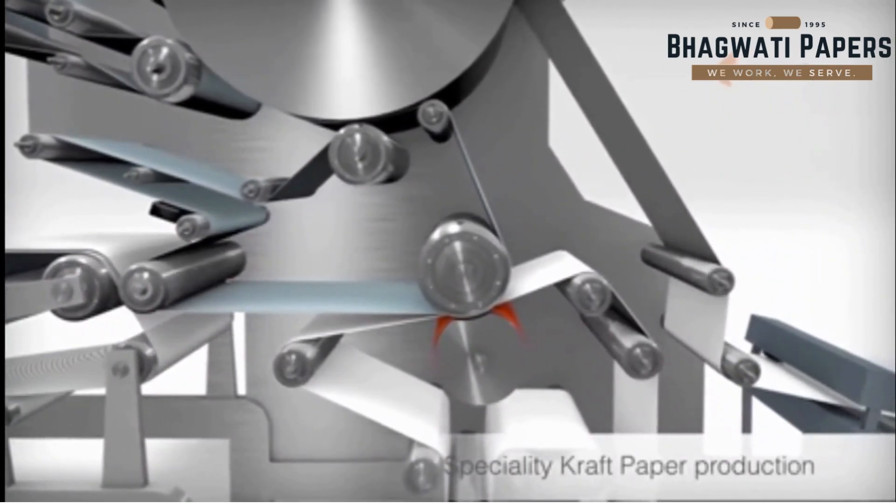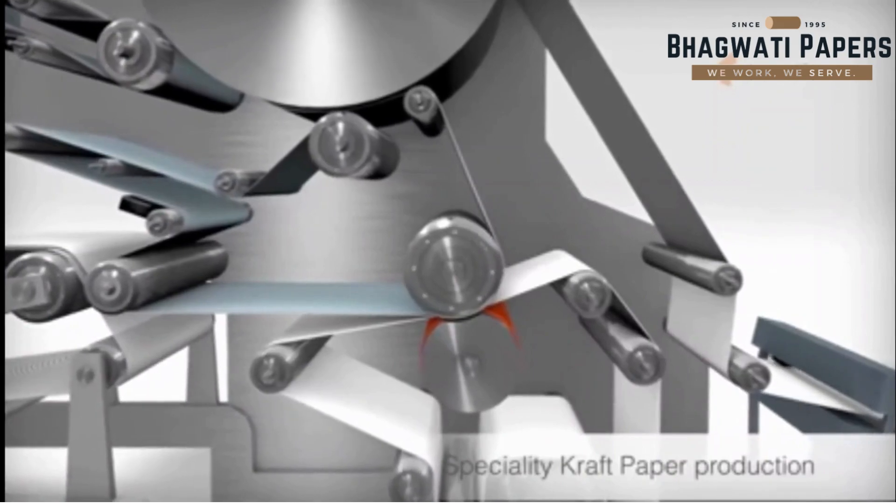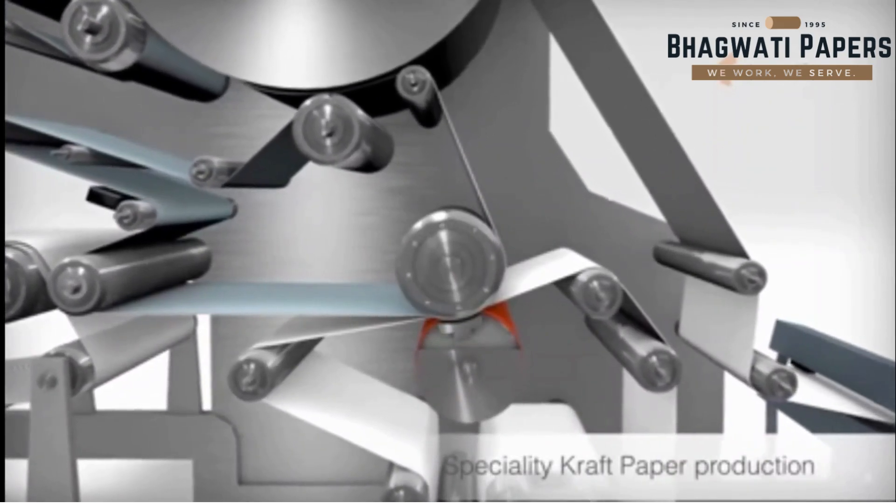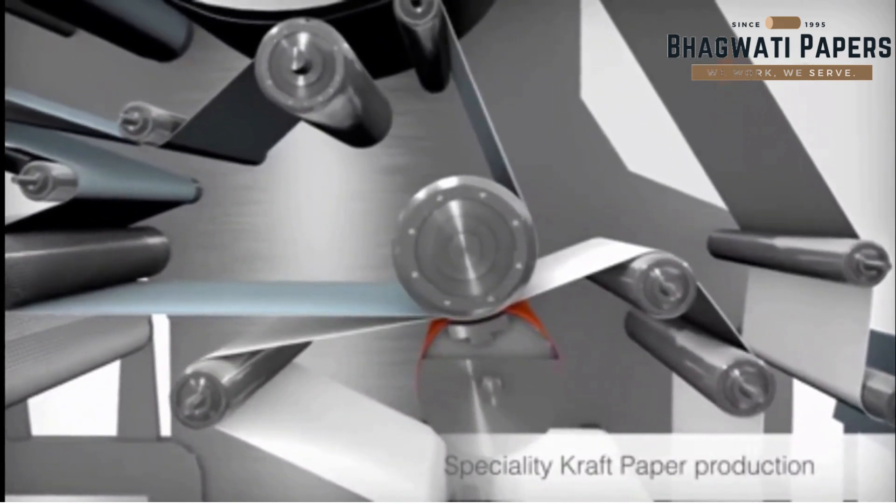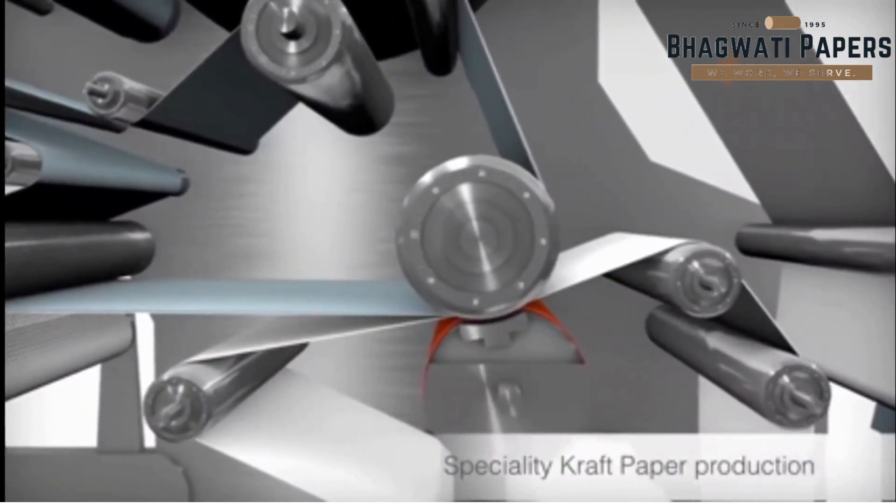The special press technology is the shoe press, in which one of the wheels has a flexible belt that increases the length of the pressing zone and achieves a higher dry content than a standard press.